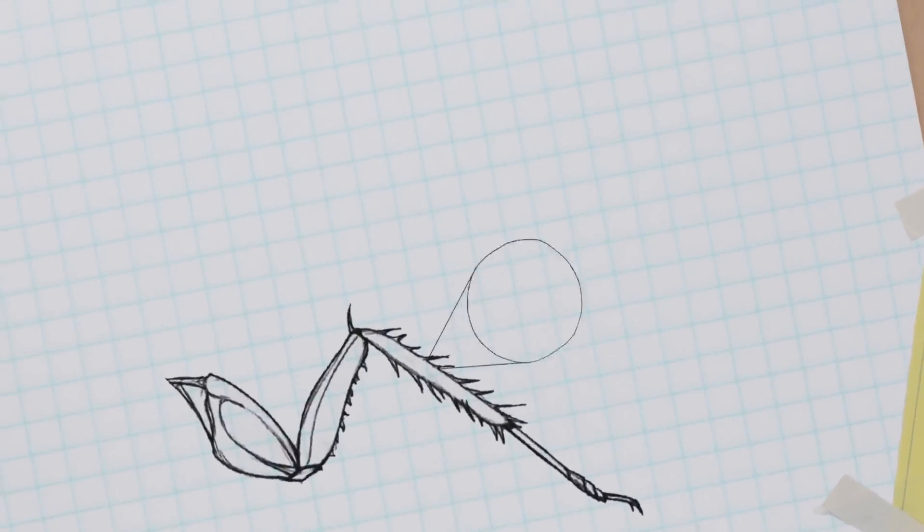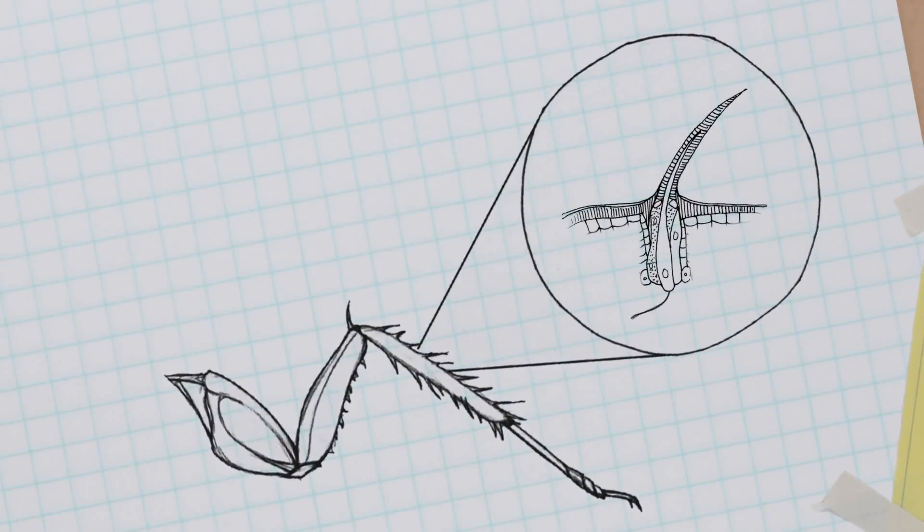So this is the leg of a cockroach, and the cockroach has all these beautiful hairs and pricklies all over it. And underneath each one of those is a cell, and this cell is a neuron. And this neuron is going to send information about wind or vibrations. If you ever try to catch a cockroach, it's hard, because they can feel you coming before you're even there. They start running.